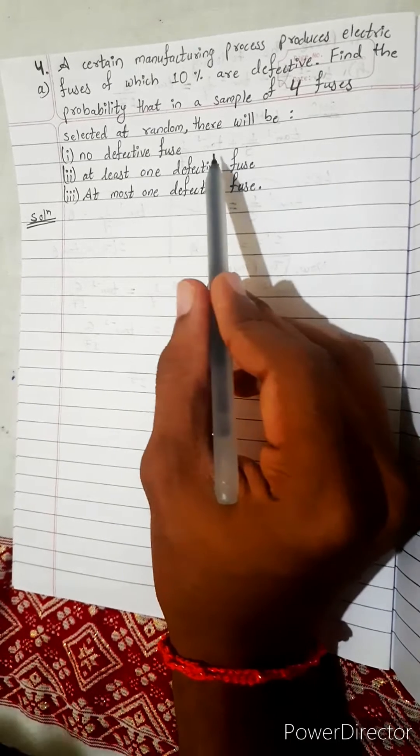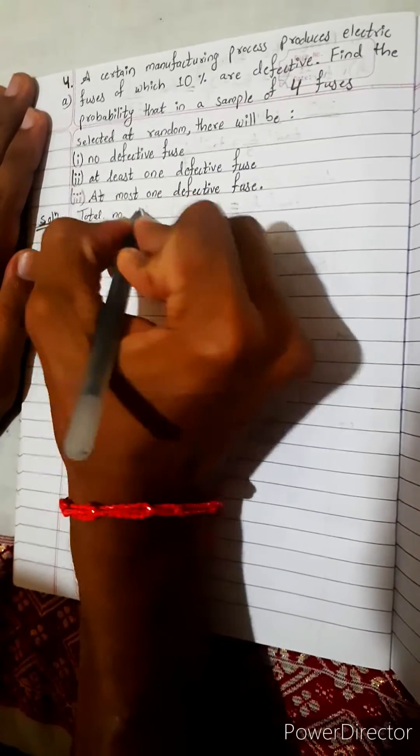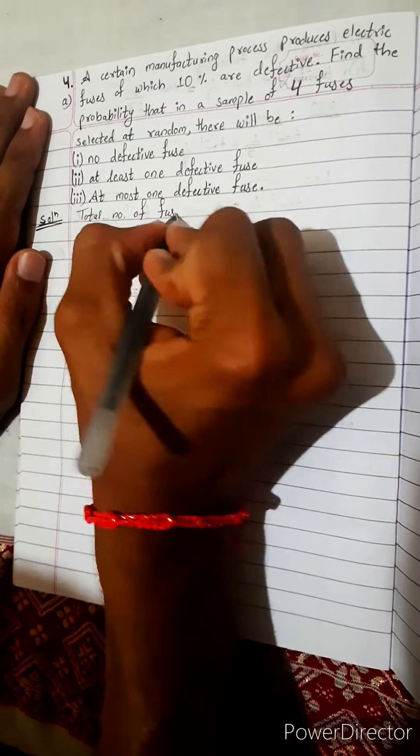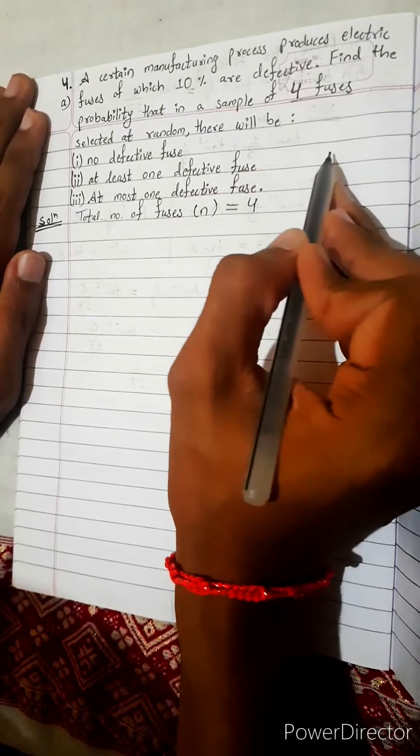Defective fuse unu vayna hare. Te barah defective fuse use garna ho dhai na. Total number of fuses, suppose n equals to 4. Sample of 4 fuses.